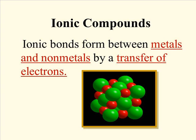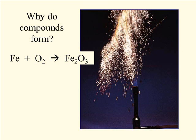This chapter deals in the beginning with the formation of ionic compounds. Ionic bonds form between metals and non-metals by a transfer of electrons. Why do compounds form at all? What would make rust — which is iron 3 oxide — form when you bring iron and oxygen together?